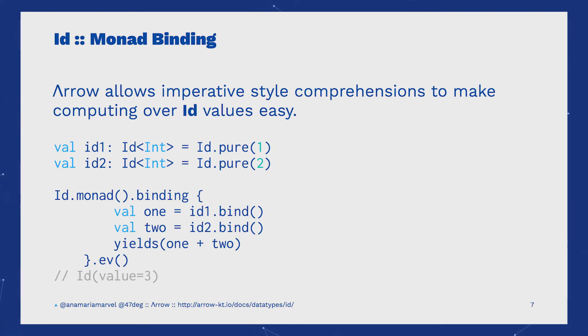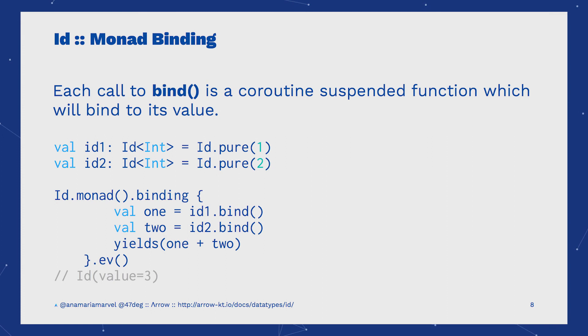where you can have one instruction at a time in sequence stating what is happening. Monad comprehensions are implemented in Arrow as Kotlin coroutines. Here, the function bind binds to the left value once flatMap completes.